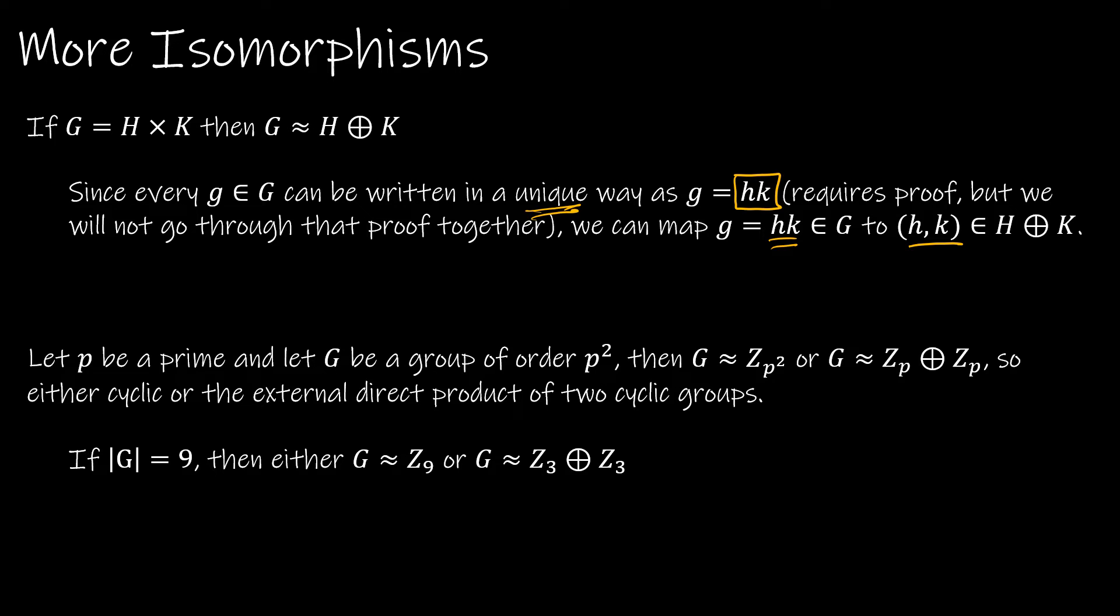In addition, let p be a prime and G be a group of order p². So some prime number squared, then our group is isomorphic to either Z sub that prime squared, or Z sub p external direct product with itself. So for instance, if |G| = 9, obviously nine is three squared and three is a prime. So G is either going to be isomorphic to Z₉ or Z₃ cross Z₃.